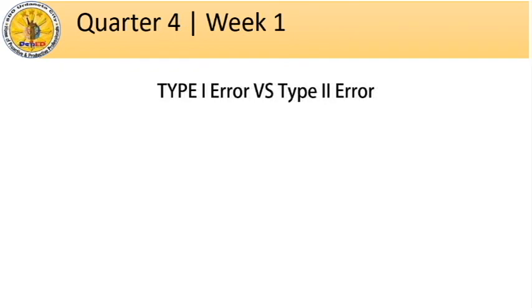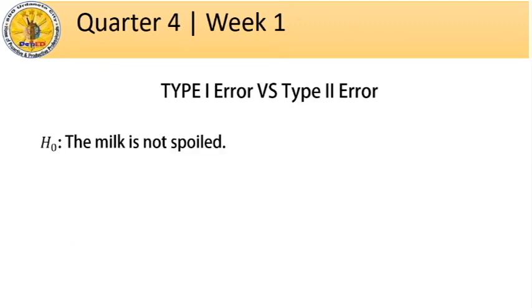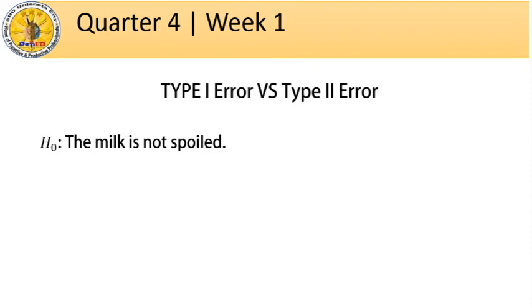To illustrate further, let us say there is a glass of milk on a table — like in Alice in Wonderland — that will make you big. You want to become big, but you are not sure whether the milk is spoiled or not. Our null hypothesis is H sub 0: the milk is not spoiled. You rejected it and drank the milk. After a while, your stomach hurts — therefore, you committed a type 1 error. On another case, you did not reject the null hypothesis, so you did not drink the milk, thinking it was spoiled. Another student took it and became big. You committed an error in your judgment, and this error is the type 2 error.